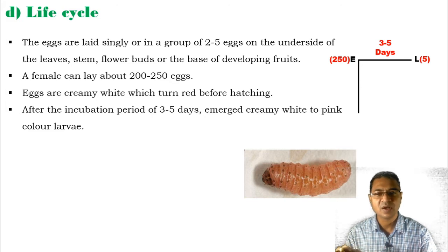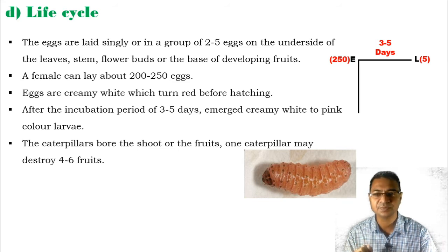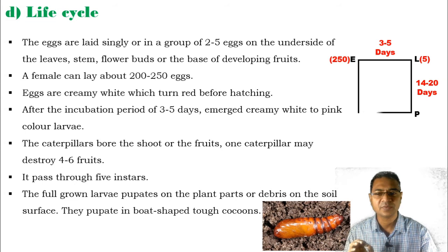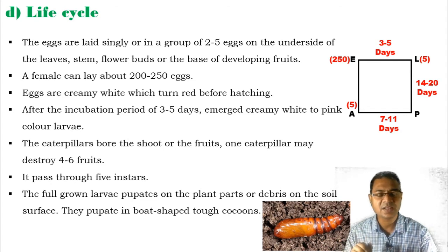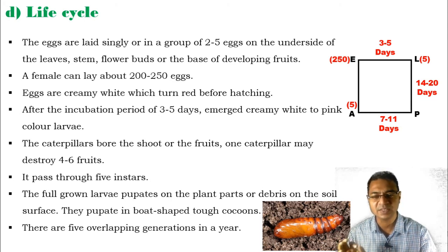Eggs are basically cream white and during hatching they turn reddish in color. After 3 to 5 days, a creamy white to pinkish colored larva or caterpillar emerges. The caterpillar initially bores the shoot or fruits, and one caterpillar may destroy 4 to 6 fruits. It passes through 5 instars, with the full-grown larva taking around 14 to 20 days to complete all 5 instars. It then pupates on plant parts or debris on the soil surface in a boat-shaped tough cocoon. The pupation period is about 7 to 11 days, after which it transforms into the adult stage. There are 5 overlapping generations per year.